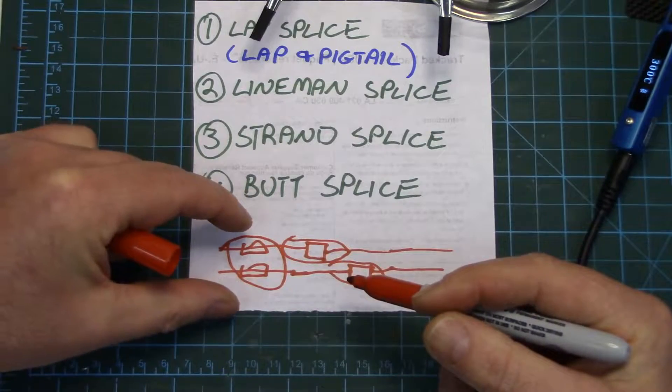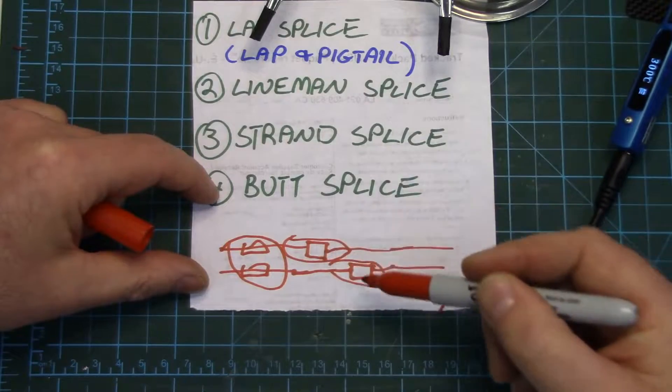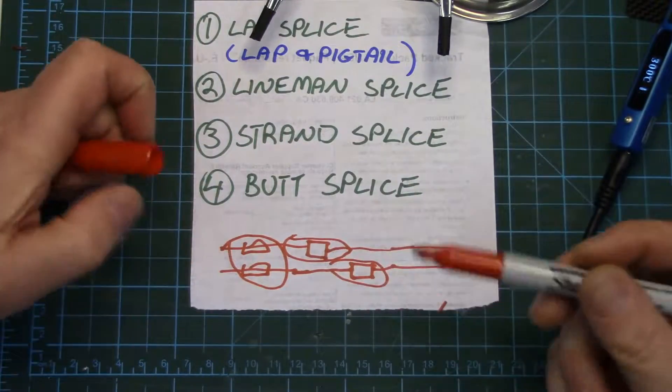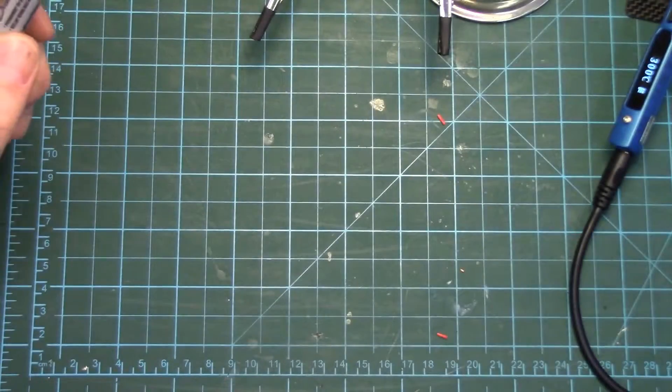Whereas if you can offset them that keeps that bulging down a little bit. So I guess we're on to a lineman splice now.